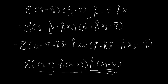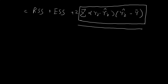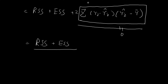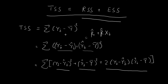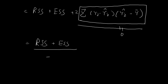So we've proved what we set out to prove. We've proved that the cross-product term is equal to zero, and so the total sum of squares is equal to the residual sum of squares plus the explained sum of squares. We have completed our proof.